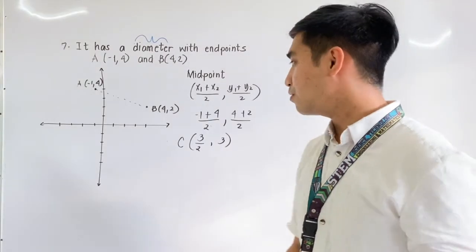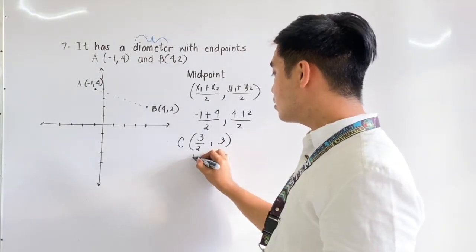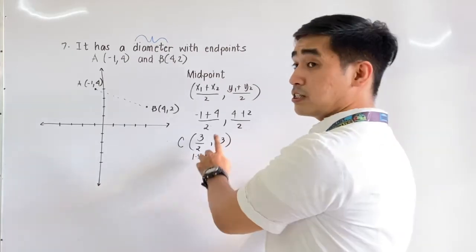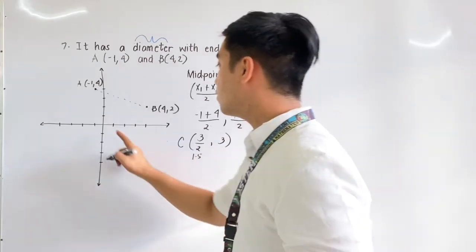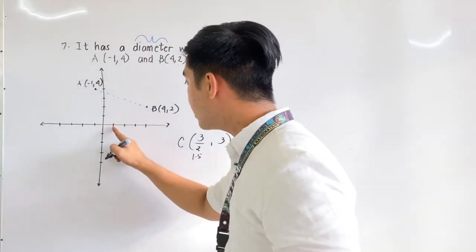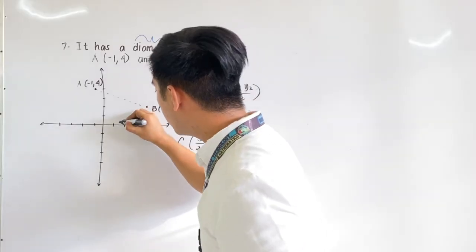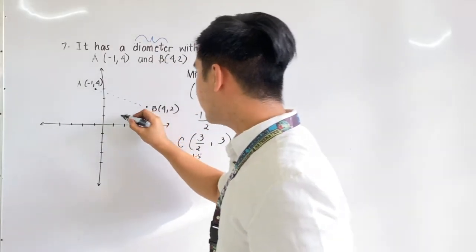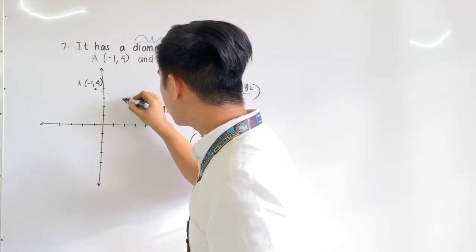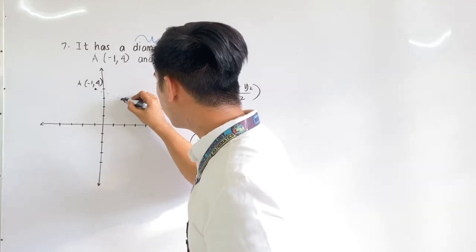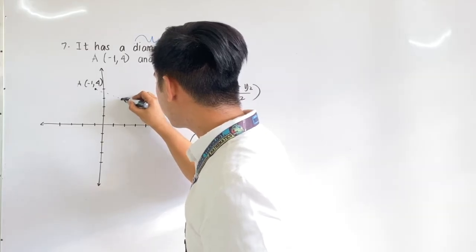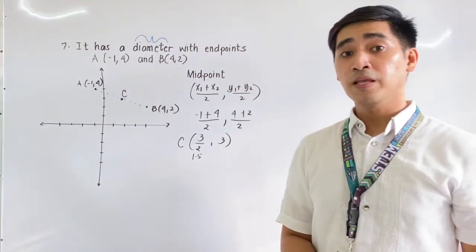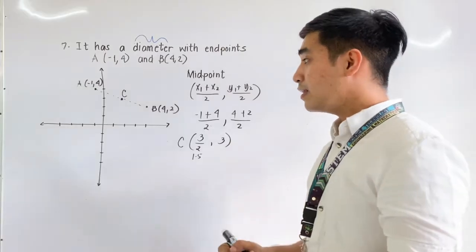Let us try to graph. 3 halves is 1.5, so that is positive 1.5. This is 1, this is 1.5 — positive 1.5 and then 3. So this is 3 and this is 1.5. Therefore, this is now the center. We are now given the center.